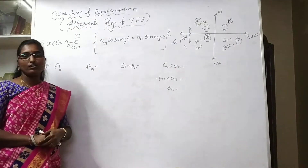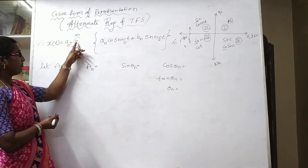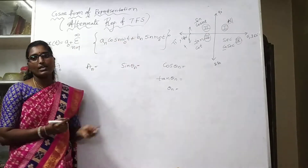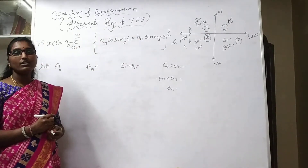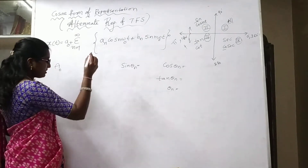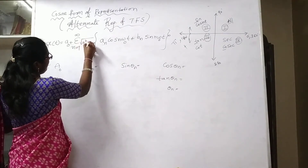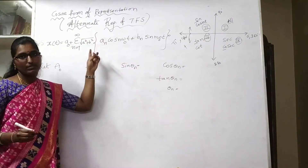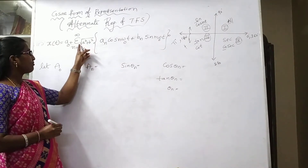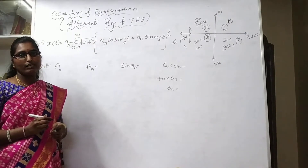For that, I consider the trigonometric Fourier series expansion: A₀ plus summation n=1 to infinity of Aₙcos(nω₀t) plus Bₙsin(nω₀t). Here I will make one arrangement — I will multiply and divide by the term √(aₙ² + bₙ²) so that the original signal will not be affected.